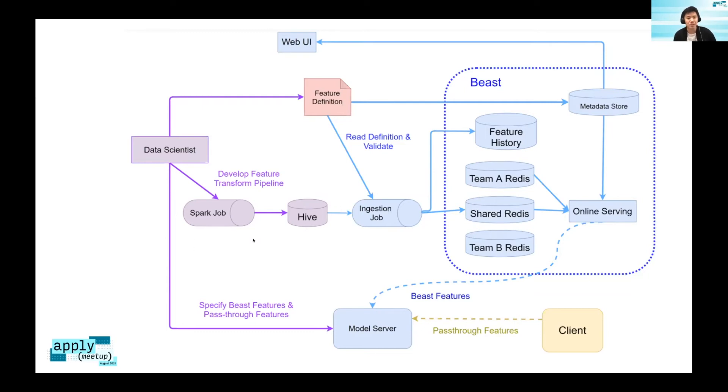Then data scientists will still be in charge of the feature transformation pipeline because they know the business logic, and it will generate a hive table which stores all the features. But after that it's all automated. We have an Airflow DAG that will listen to the hive table, and once that table is ready we would read the definitions from the metadata store. We would validate the type is right - we also allow downcast if you want to cast your float64 to float32, we support that. We also do a bunch of validation - you have to pass those checks before really putting your data into Redis. Then the ingestion job would automatically put the things into Redis and that would be made available for online serving.